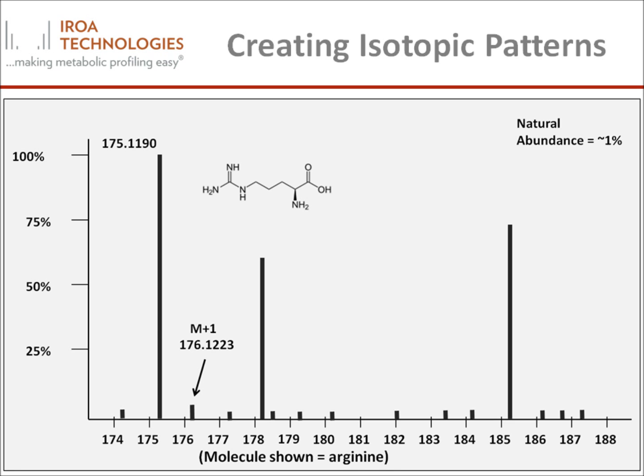This means that in a mass spectrometer, arginine will have a base peak at 175.119 amu and a very small peak, called an M plus 1, at 176.122 that is approximately 6% of the base peak's height. This small size of the M plus 1 peak makes it generally useless for data interpretation.